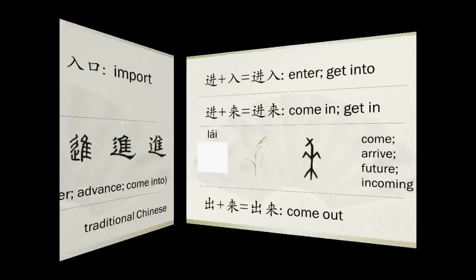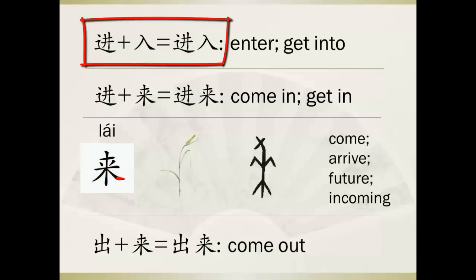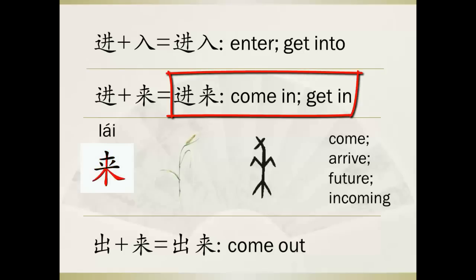进 means moving forward, and 入 means from outside to inside. Together, 进入 means moving from outside to inside — that is, enter or get into. Here, 进 means enter and 来 means come, so together 进来 means coming in or getting in.